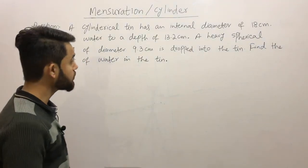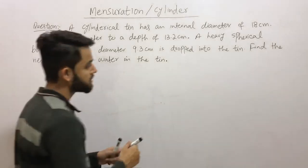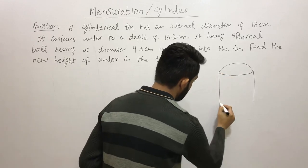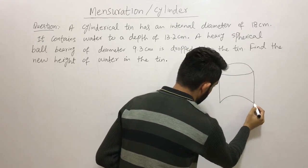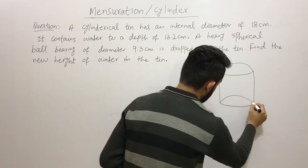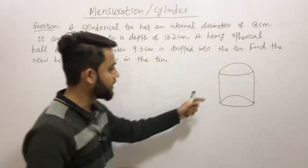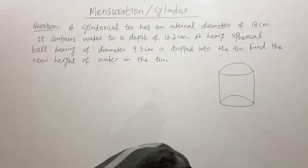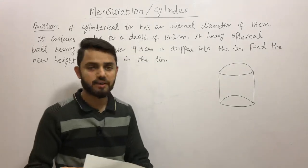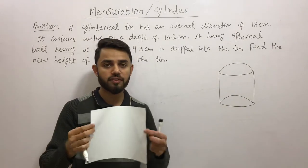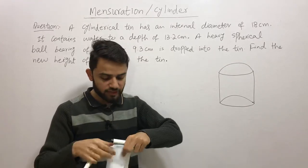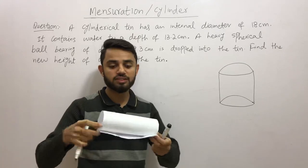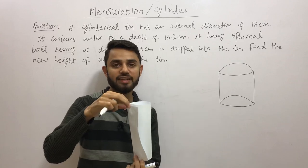First, let's talk about what a cylinder is. I'm drawing a cylinder here — it has two flat surfaces with circles and a curved surface. For better understanding, imagine a rectangular sheet of paper folded around: you get a cylinder with two circles along with the curved surface. That's basically what a cylinder looks like.